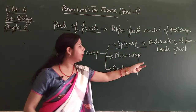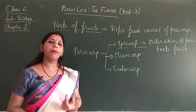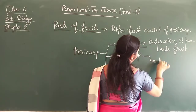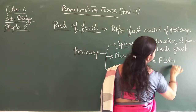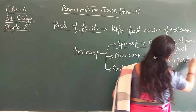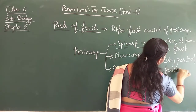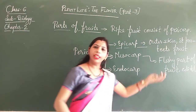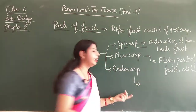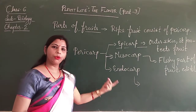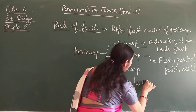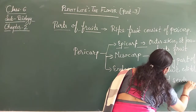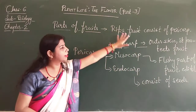What is the mesocarp? It is the middle fleshy part of the fruit which is edible — edible means you can eat it. The last part is the endocarp. It is the internal part of the fruit and contains seeds. So these are the parts of the fruit.